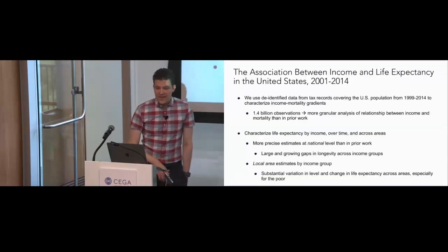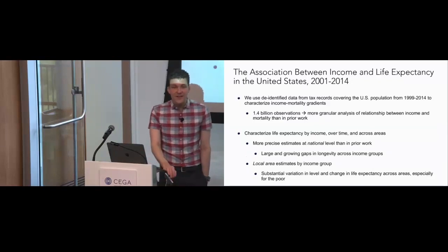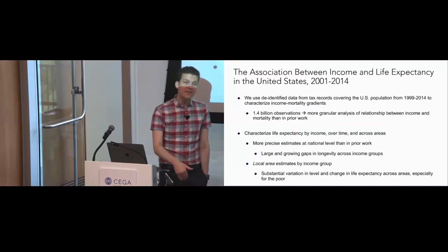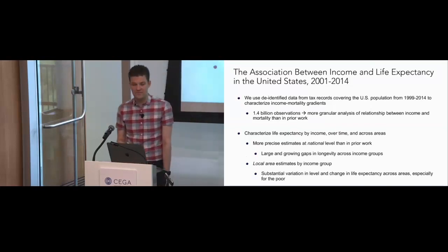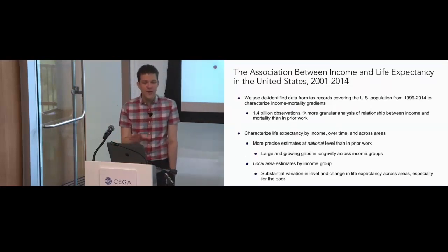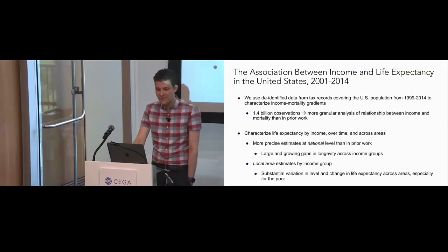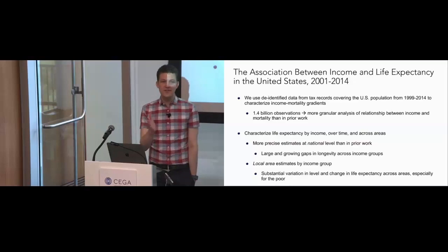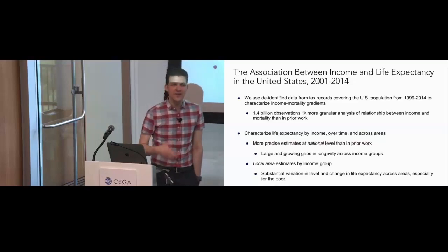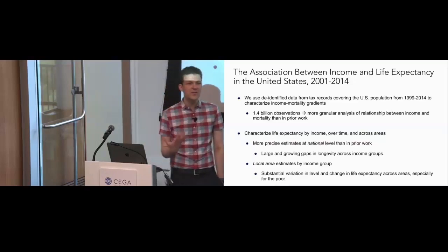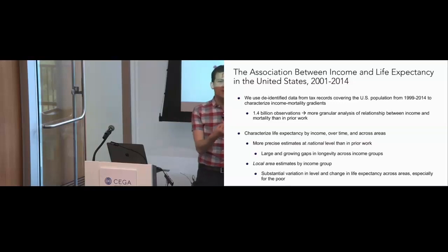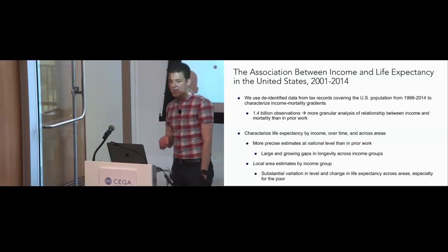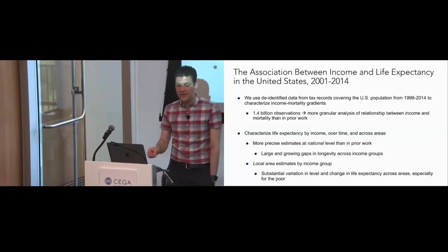In this project, we used de-identified data from tax records covering the entire U.S. population from 1999 to 2014 — totaling 1.4 billion person-year observations. That really allows us to bring a magnifying glass to relationships that people had already explored but hadn't been able to explore in such granularity — doing a granular analysis of the relationship between income and mortality.